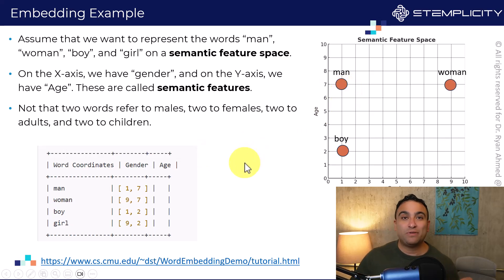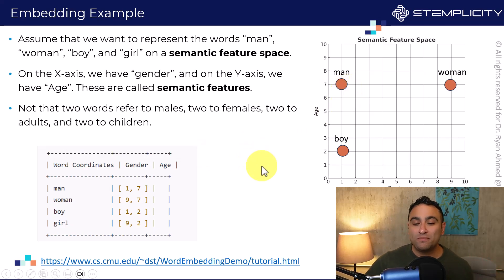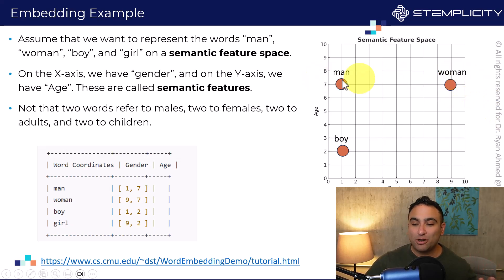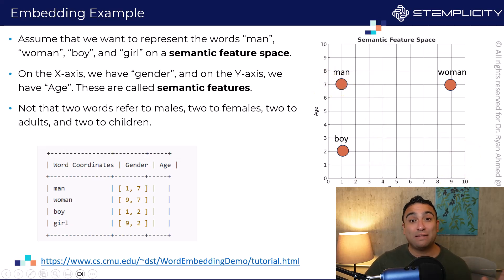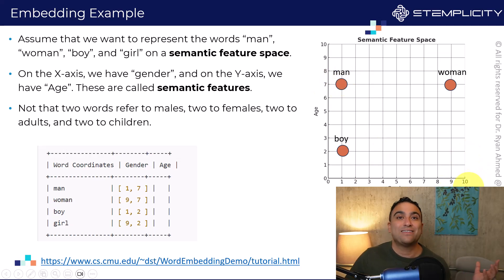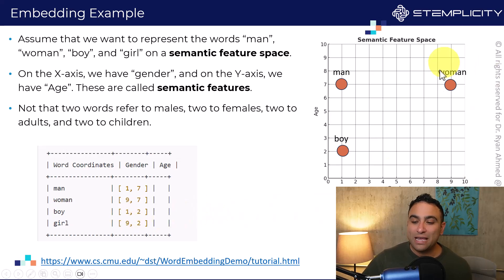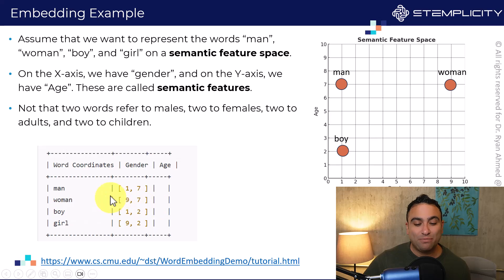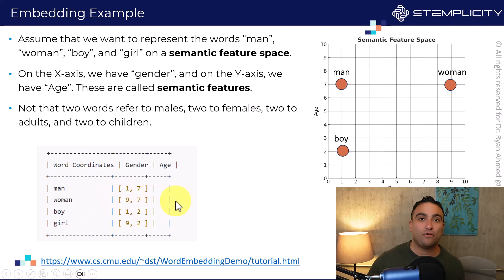Now let's represent 'woman'. A woman would be somewhere here — she's going to have roughly the same age as a man, but the gender number is going to be very different, let's say nine. So we're going to encode 'woman' as nine and seven, and that will be the vector representation of that word.